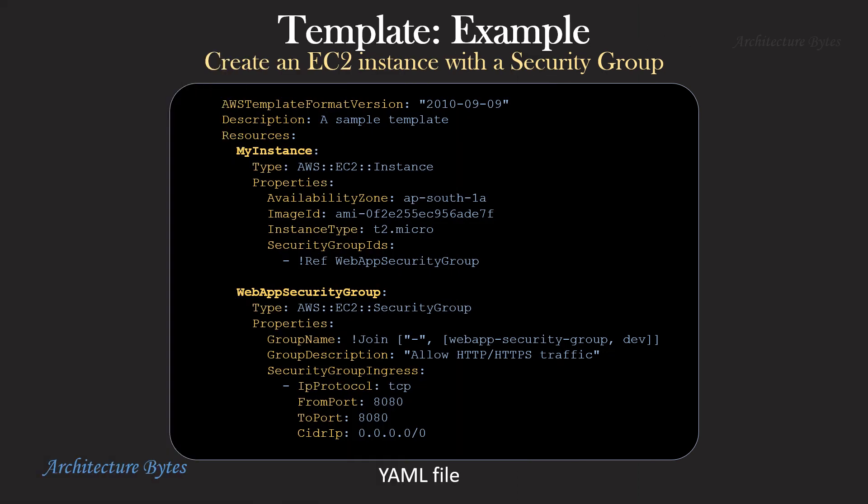Here is another example where the template has two resources: an EC2 instance and a security group. The EC2 instance part is similar to what we've seen previously, except for the security group ID property which refers to another resource in the template — that is, web app security group. The web app security group has the type AWS EC2 security group, and here we want to allow TCP traffic on port 8080.